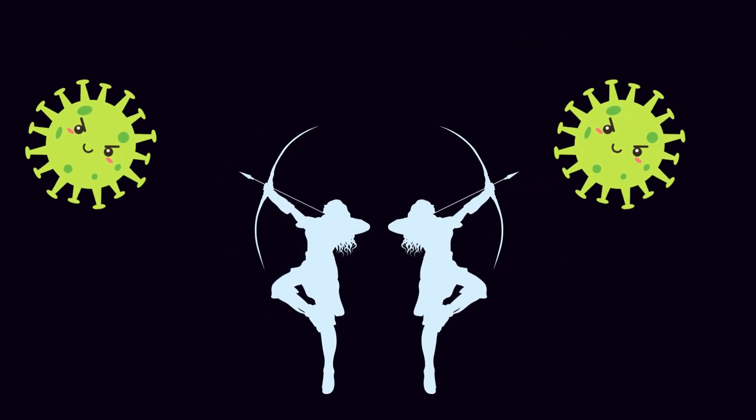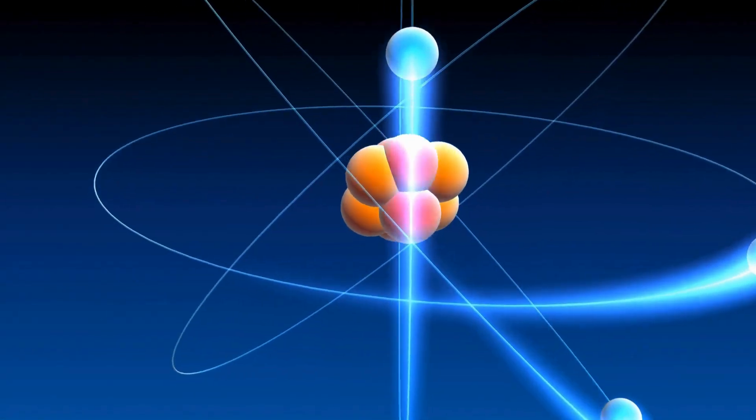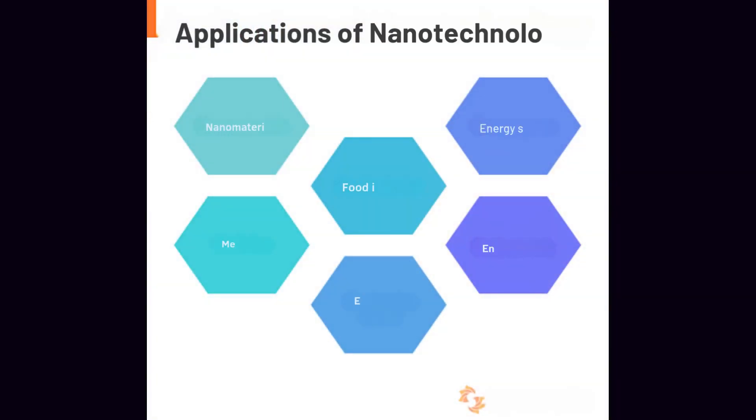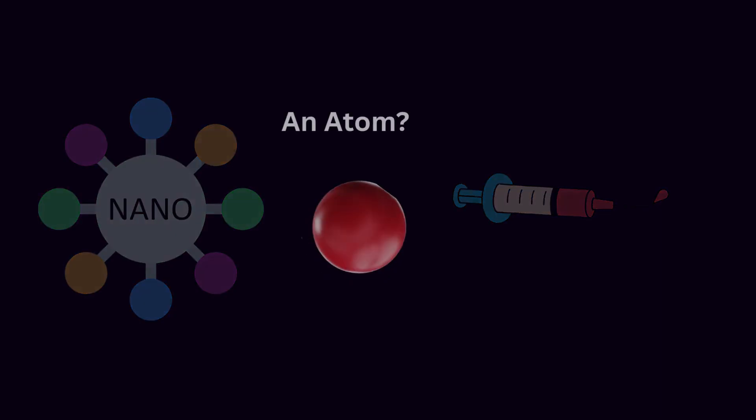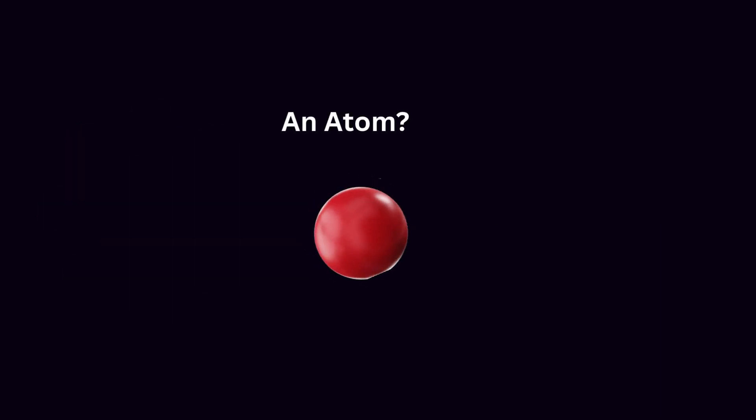Now, a new set of warriors is joining the fight—machines smaller than dust, built from the stuff of atoms. Nanotechnology could change how we deliver drugs, turning each dose into a precision strike. But how can something so tiny carry hope so big?